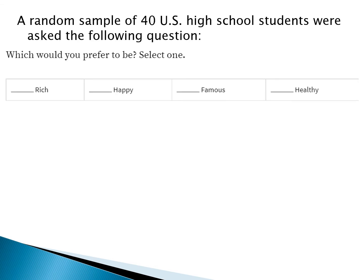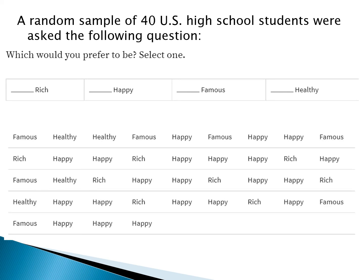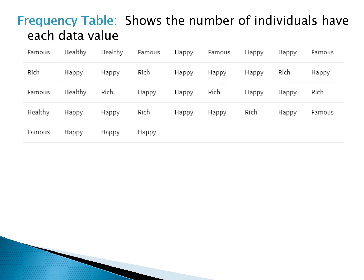So what does a data set look like? In this example we have a random sample of 40 U.S. high school students who were asked: would you prefer to be rich, happy, famous, or healthy? Here we can see their responses. When we look at this data set, it's normal to feel a bit overwhelmed trying to interpret it. One of our first jobs in statistics is to summarize this data set with some kind of image or numerical display that lets us quickly get an impression of the data — and the first way we're going to do that is with a frequency table.